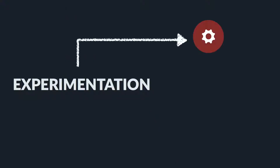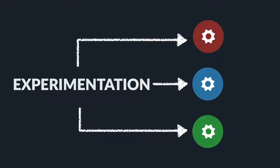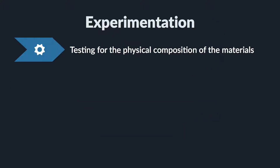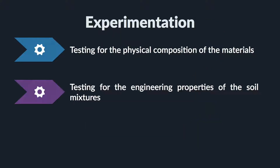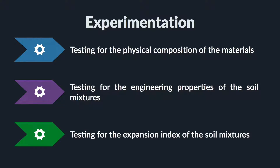The experimentation for these mixtures can be divided into three components: testing for the physical composition of the materials, testing for the engineering properties of the soil mixtures, and testing for the expansion index of the soil mixtures.